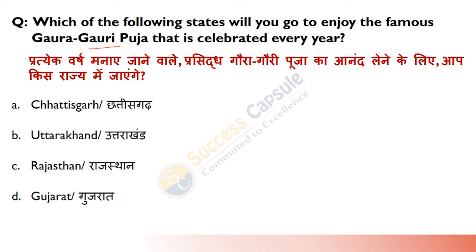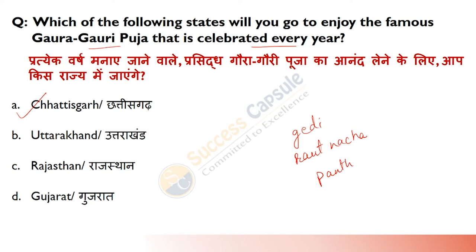Gora Gori Pooja — which state celebrates this festival each year? Answer is A — Chhattisgarh. Gora Pooja means Lord Shiva and Gori Pooja means Goddess Parvati. This festival is related to pastoral life in Chhattisgarh. Three important dances associated with it are Gedi, Rothnach, and Panthi Nritya. The Gedi dance is performed by the Gond tribe, and the Roth dance is by the Yadav community.